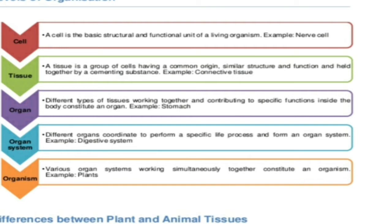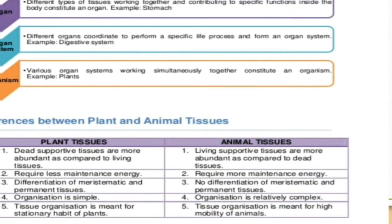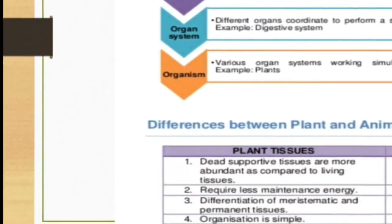So once again: cell is the basic unit, cells combine to form tissues, tissues combine to form organs, organs combine to form organ systems, and organ systems combine to form organisms. We are an organism as a whole and we have various organ systems working inside our body.